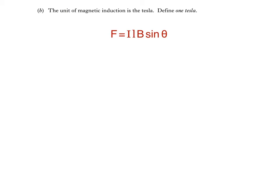F is equal to I L B sine theta. This is the equation which allows you to calculate the force experienced by a current carrying conductor of length L metres placed in a magnetic field of magnetic induction B Tesla. I is the current in the conductor, and theta is the angle between the conductor and the magnetic field. The first thing we can do is rearrange the equation so that magnetic induction B is the subject — just divide both sides by I L sine theta, like so.